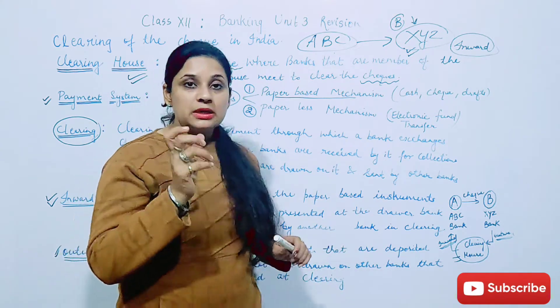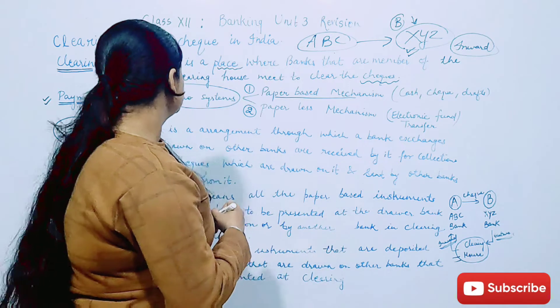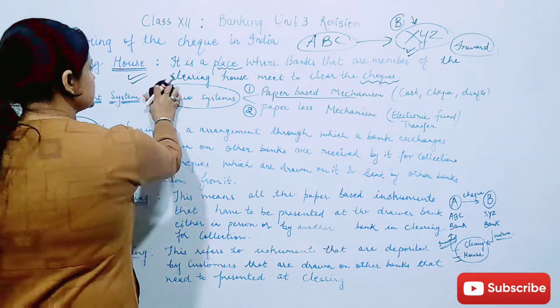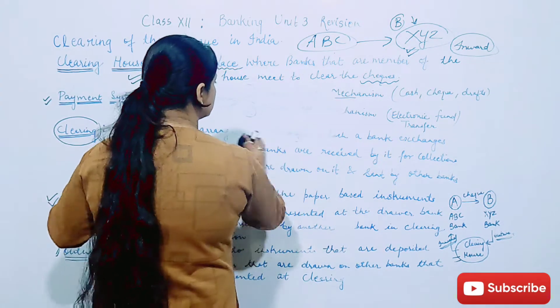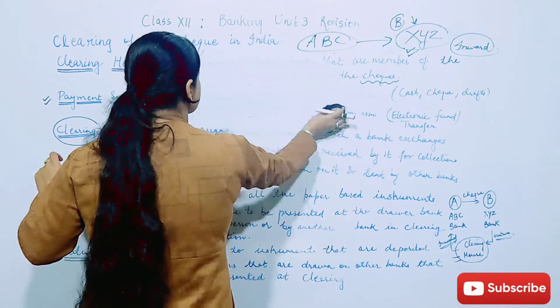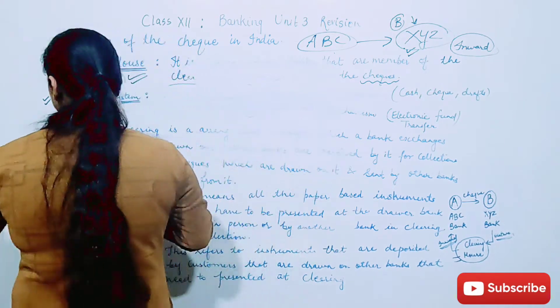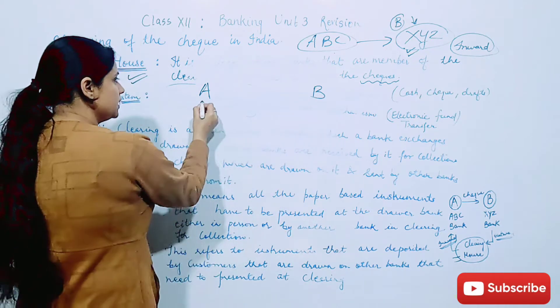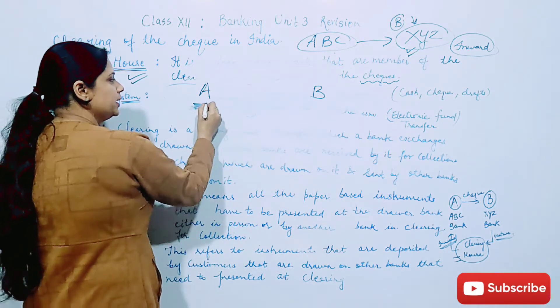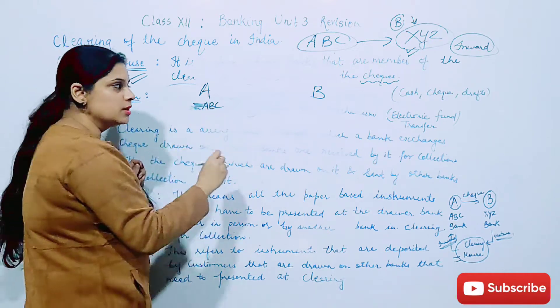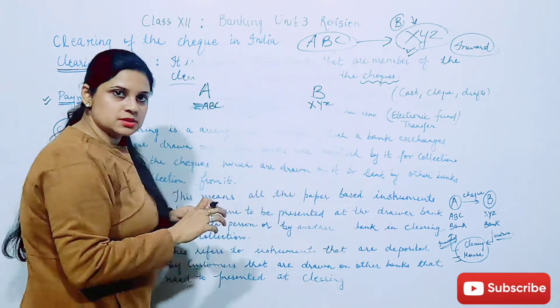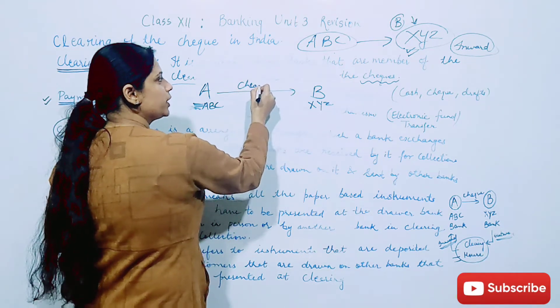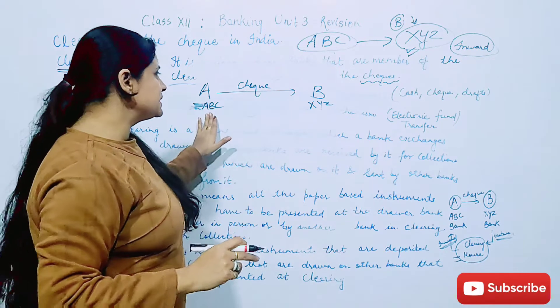Now understand the meaning again. Let me just take the example, I am just explaining you again. Let us understand this. Mr. A, Mr. B, two parties. His bank account is ABC, his bank account is XYZ. So now he has a check presented. ABC bank check to XYZ bank.